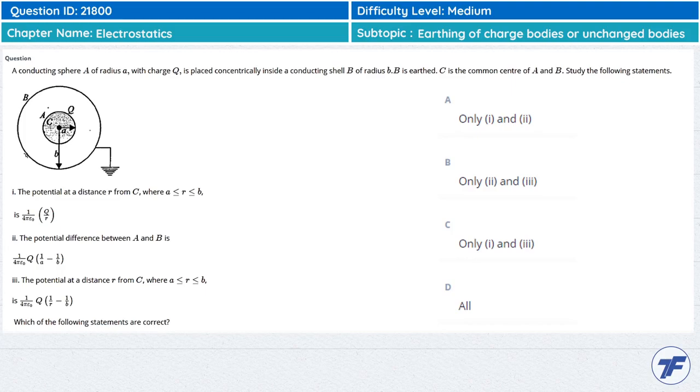The potential at a distance small r from C value 1 upon 4 pi epsilon 0 q by R minus q by B. So if this statement is correct, we will see how the statement is correct.